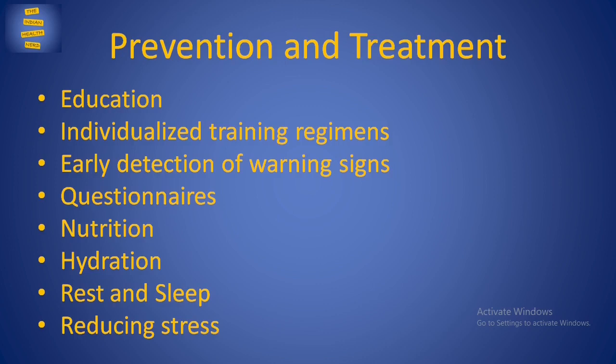Early Detection of Warning Signs: Coaches and athletes should be aware of some early signs of overtraining. Firstly, if the athlete is overtrained, there is an increased effort required by the athlete to complete a particular task that he would have completed without the need for increased effort under normal conditions. Furthermore, despite the increased effort, the athlete's performance for that particular task is lower.